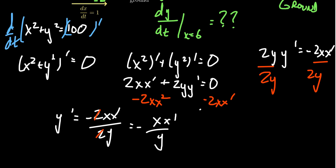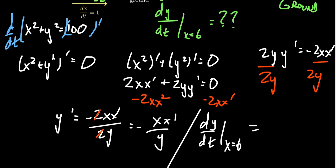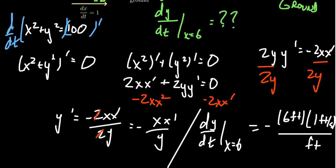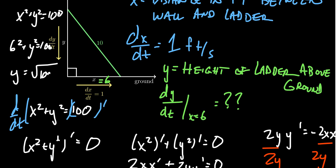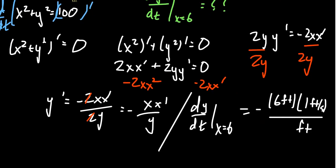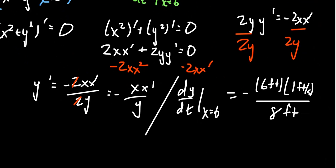Now let's fill in the information we know. We're after dY/dT at the moment X equals 6. We know X equals 6 feet at this moment, and the derivative of X with respect to time is always 1 foot per second. In the denominator we need Y. Going back to the original equation X squared plus Y squared equals 100, plugging in X equals 6 gives 36 plus Y squared equals 100, so Y equals the square root of 64, which is 8 feet. Plugging in, Y prime equals negative 6 times 1 over 8, which simplifies to negative 3/4 feet per second, or negative 0.75 feet per second.